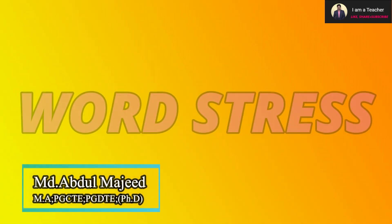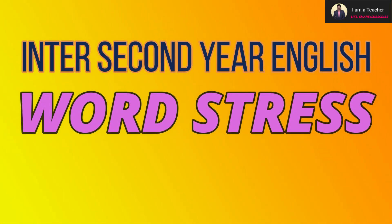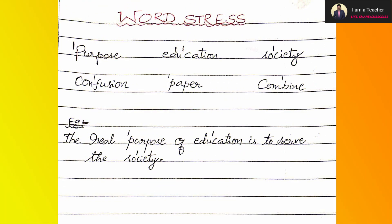Hello students, welcome back. Today we are going to discuss second year English topic: word stress. Word stress is question number 19 in the board exam. What is word stress? If a word has more than one syllable, one particular syllable should be pronounced with greater force. This quality of language is called word stress. English language has so many peculiar qualities, and one of such qualities is word stress.